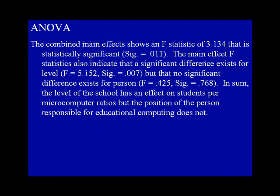The combined main effects show an F statistic of 3.134 that is statistically significant at the .011 level. The main effect F statistics also indicate that a significant difference exists for level — F equals 5.152, significance equals .007 — but that no significant difference exists for person — F equals .424, significance equals .768. In sum, the level of the school has an effect on students per microcomputer ratios, but the position of the person responsible for educational computing does not.